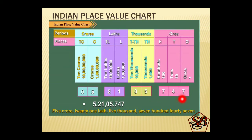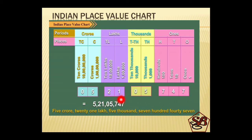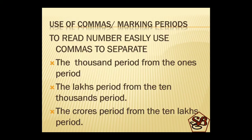Starting from the right hand side: seven, four, seven, five, zero, one, two and five. The last place — the ten crores place — is vacant, so we put a zero there. Adding a zero in front of a number does not change its value. Now we try to read this number: five crore, twenty one lakh, five thousand, seven hundred and forty seven.